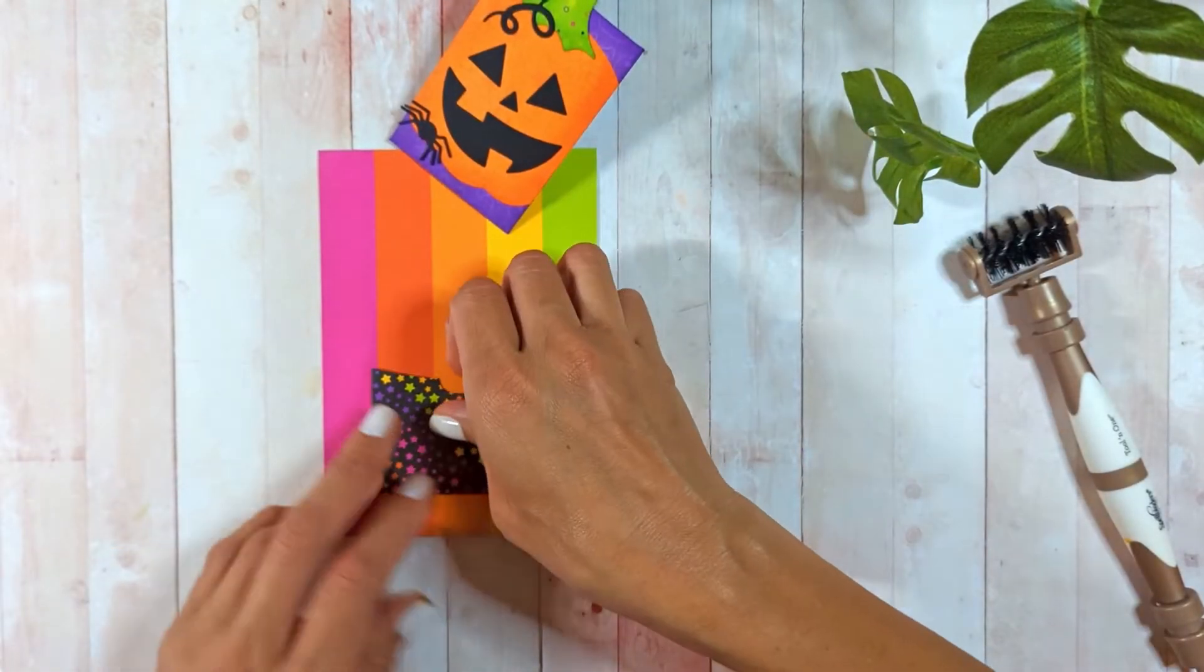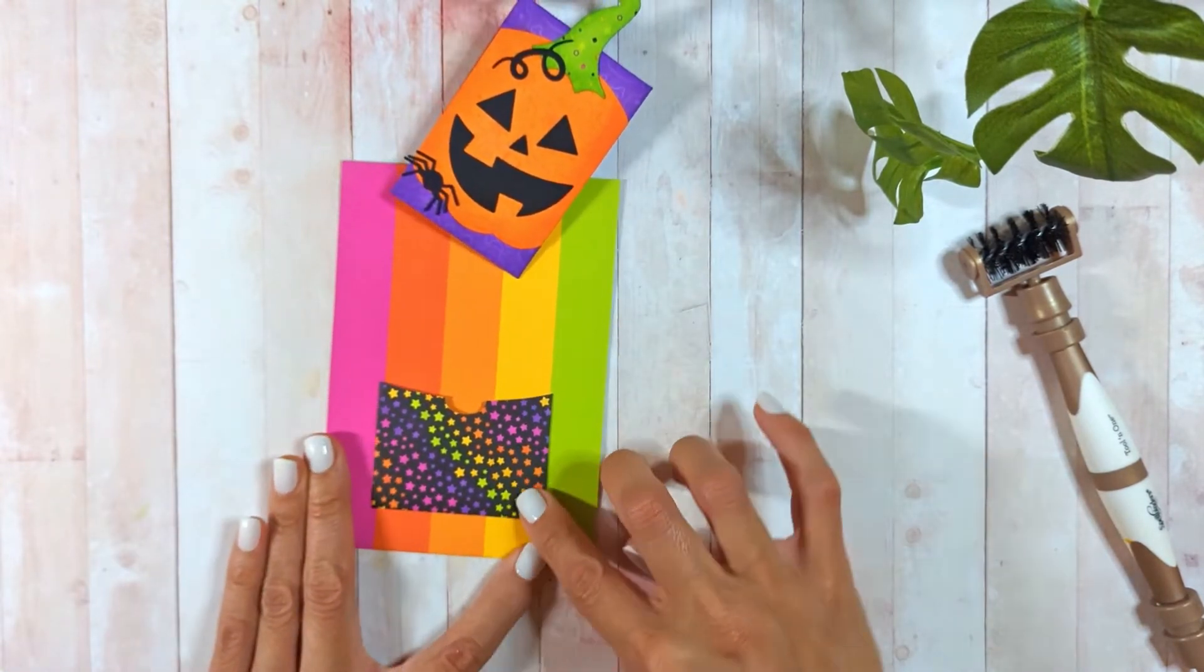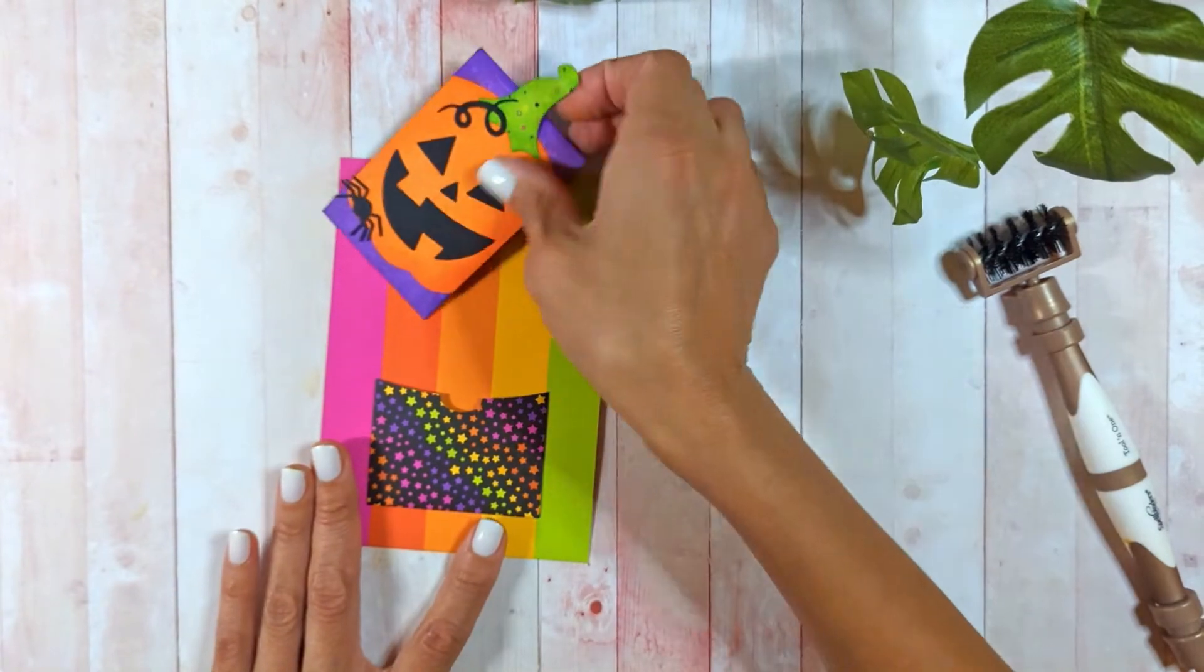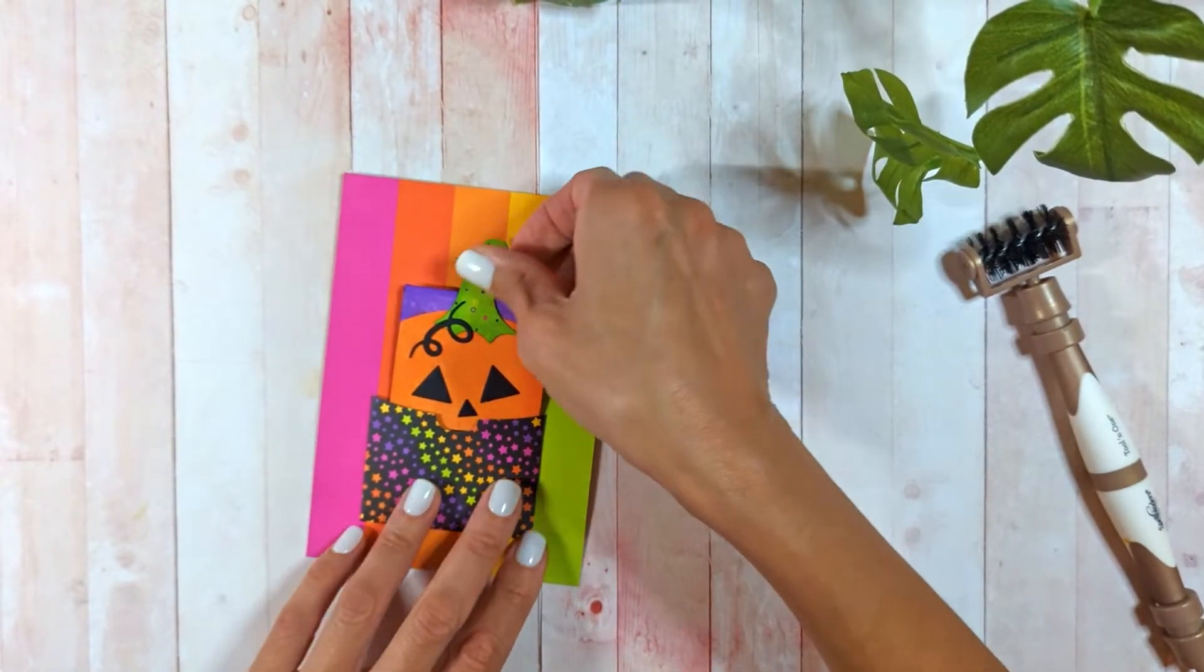I added double-sided tape behind the pocket on three sides. Then I'm going to test my pumpkin gift card holder. Look how cute it is, very beautiful.